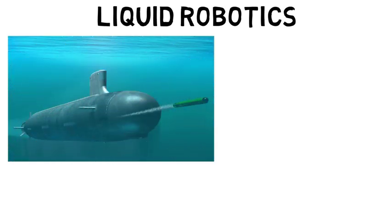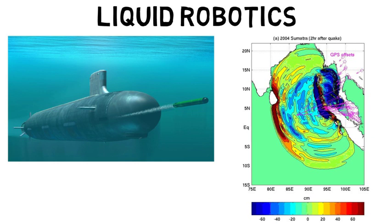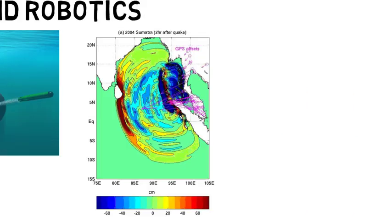Liquid Robotics is a company owned by Boeing that provides surveillance of threats out in the ocean through the use of unmanned systems, or they have projects where they use sensors to provide information on when tsunamis might occur and communicate that with a satellite which communicates back to the location where there's danger.